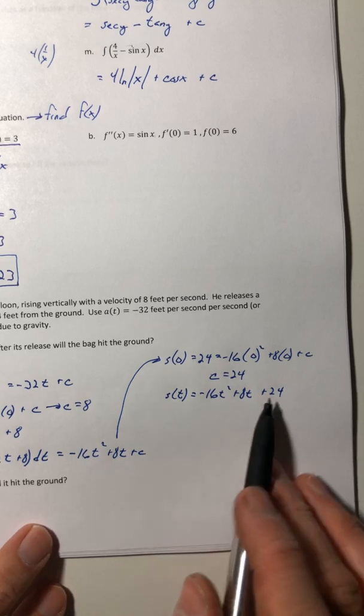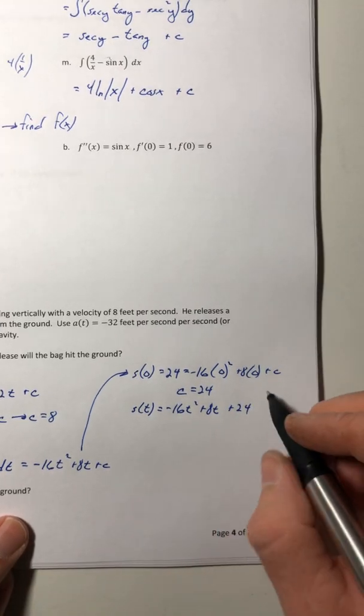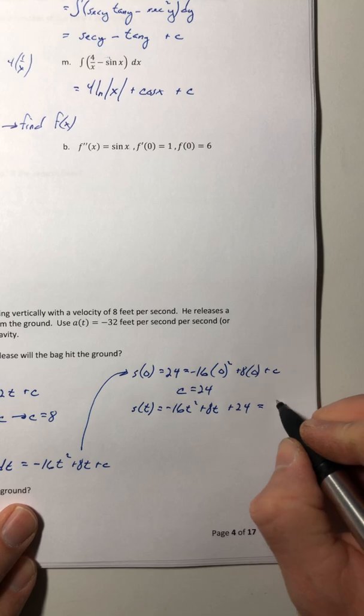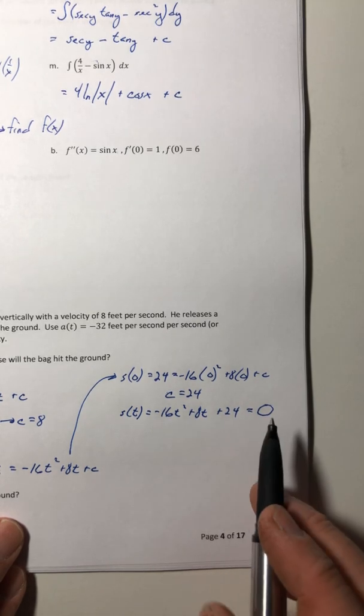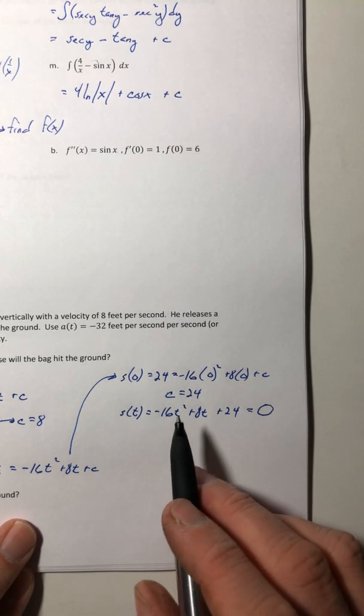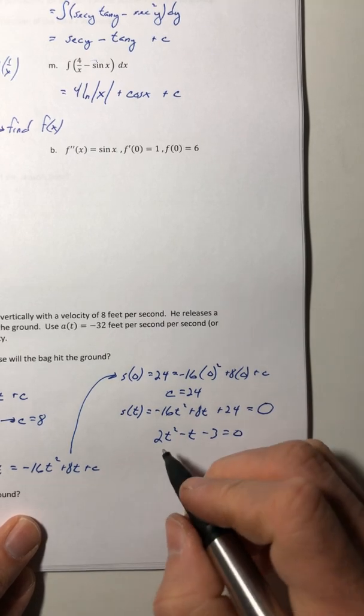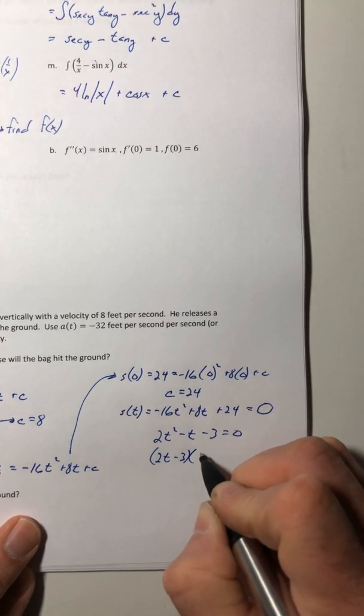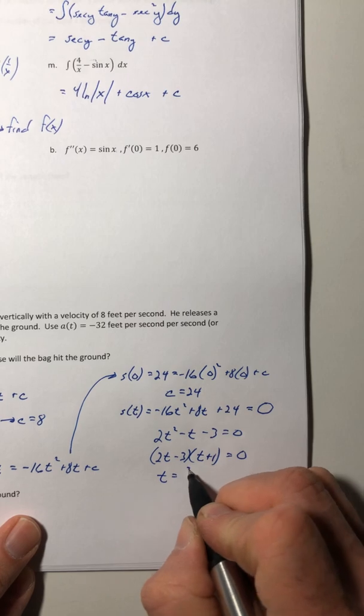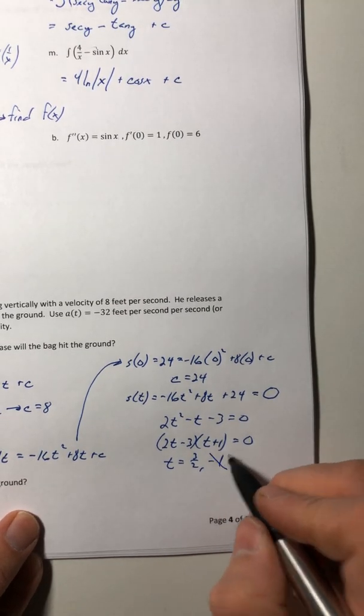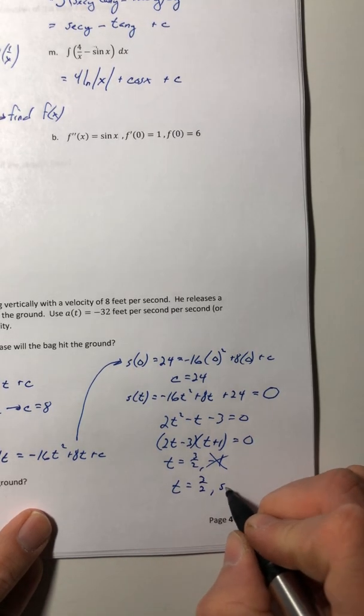So we'd like to think we're done, but we're not. Because I didn't want just the function. This is how many seconds will it hit the ground. Now that you have your position function, set it equal to the height of the ground. Well, the height of the ground is just zero. So now you've got to solve this equation here. So solve that quadratic. So let's divide everything by negative 8. Factor it. And solve for t. So 3 over 2 and negative 1. But we can't have negative time. So just 3 over 2 seconds.